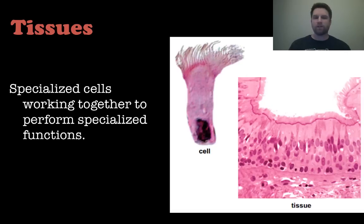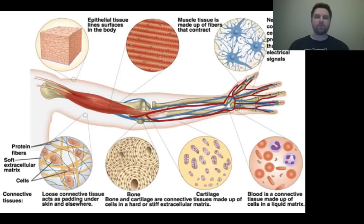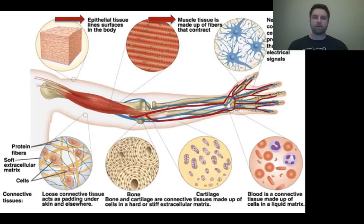When you get a whole bunch of these specialized cells working together and they perform a specialized function, this is called a tissue. A bunch of cells together create a tissue, like you see in the picture right here. Now our four main types of tissue: first is epithelial tissue, which lines the surface of our body and certain interior parts. Then we have muscle tissue, which is all those muscle fibers that contract. Then there's nervous tissue, which is brain, nerves, and all that. And then connective tissue, which includes things like cartilage and bone.